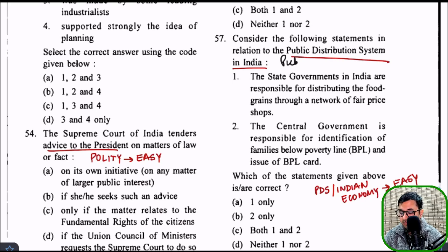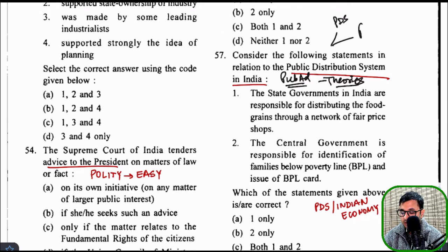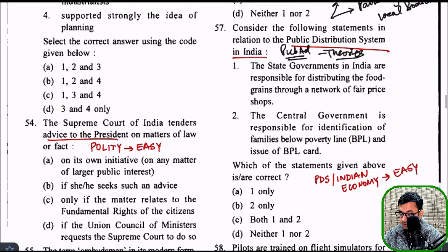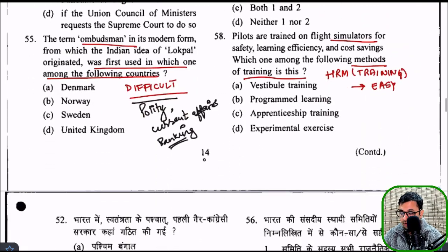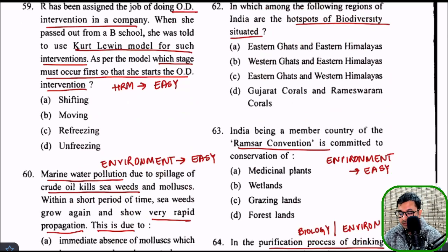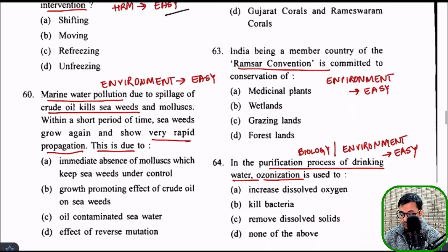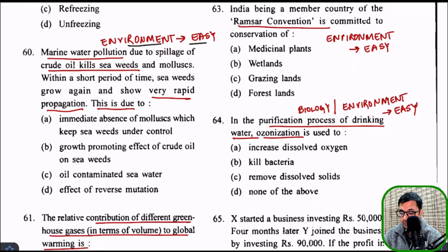A question on the public distribution system came from public administration. Theories of organization behavior and management are covered there. Public administration mainly focused on two areas: PDS and how the administration works, and panchayats/local bodies. When teaching public administration, these two topics — PDS and panchayat/local bodies — will be covered first. A question on simulation training was from HRM — very easy, already taught. HRM also had a question on the Kurt Lewin model — very easy. Then some environment questions came — marine water pollution. Environment needs to be taught in detail; they normally take whatever is going on in current affairs in the environment field and pick up the basic concept.